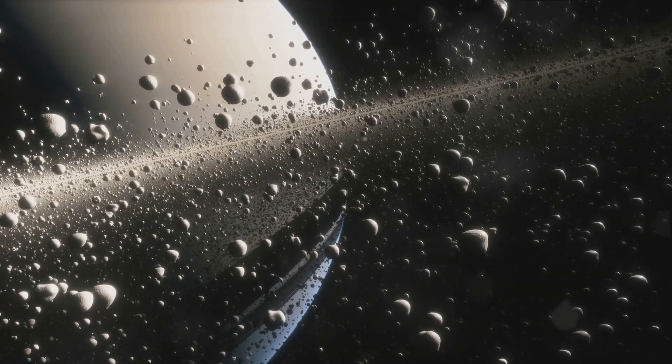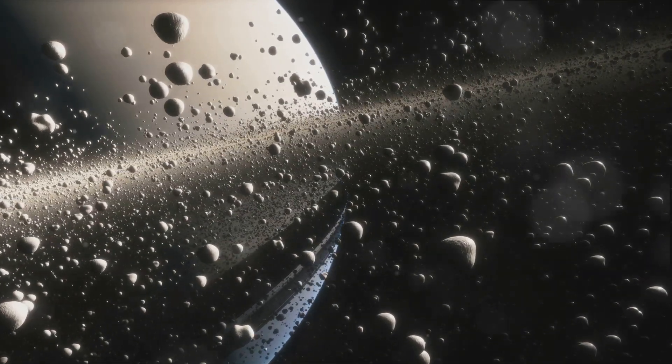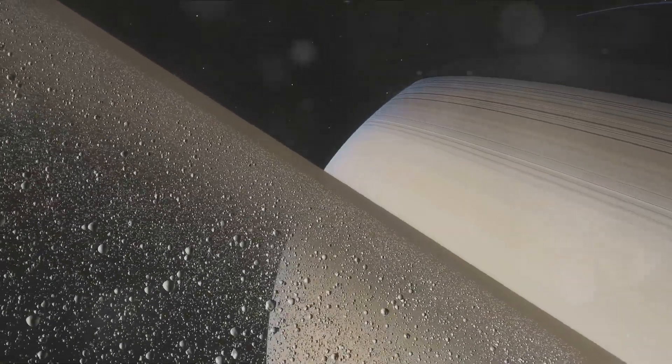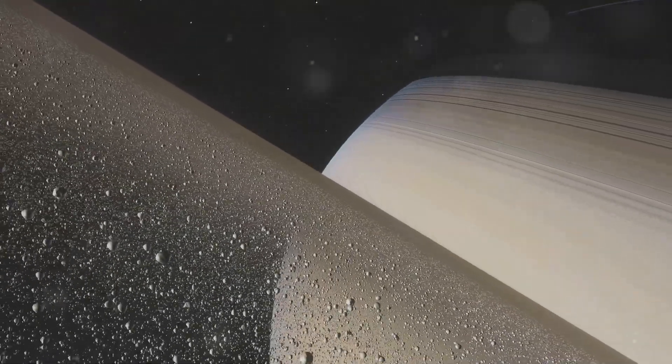Jupiter, the largest planet, is a gas giant with over 70 moons. Saturn, famous for its stunning rings, follows. These rings are composed of countless particles of ice, dust and rock.